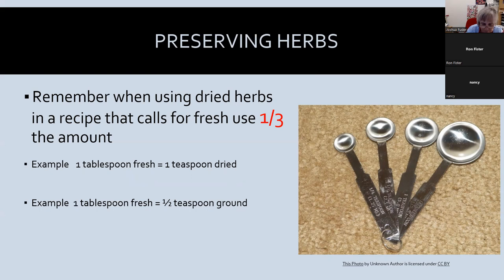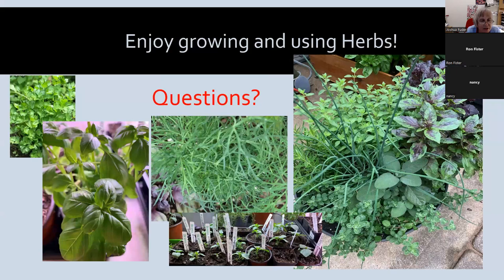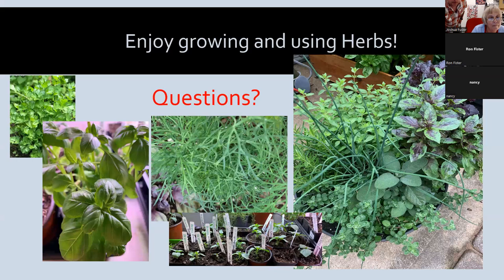We've gone over a lot today — I could have spent 30 minutes on some of these areas alone. Now if you have any questions, I'll try to answer them. A question came in: how do you remove leaves when propagating? The answer: use sharp, clean scissors to remove the leaves from the stem, and do not scar the stem.